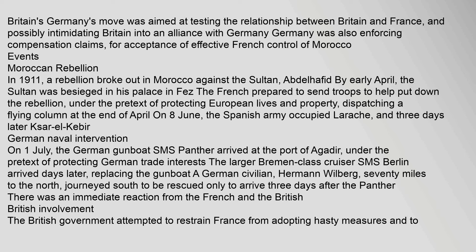In 1911 a rebellion broke out in Morocco against the Sultan Abdelhafad. By early April the sultan was besieged in his palace in Fez. The French prepared to send troops to help put down the rebellion under the pretext of protecting European lives and property, dispatching a flying column at the end of April.